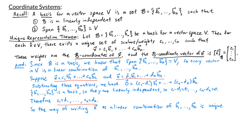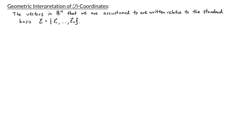Next we'll look at the geometric interpretation of coordinate systems with respect to a basis B. When we write a vector in R2, we have two components. The first component tells how many units to go in the x direction, and the second tells how many units to go in the y direction. This can be interpreted as how many units we go in the direction of standard basis vector e1 and how many in the direction of e2. So vectors in Rn have been written relative to the standard basis e1 through en. Here is the xy plane with e1 equal to (1,0) and e2 equal to (0,1), with a grid overlaid.